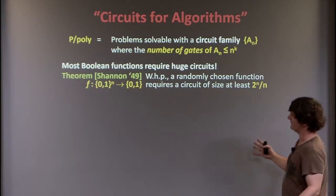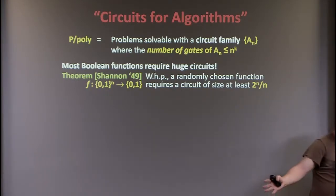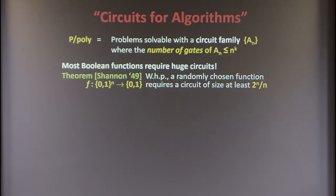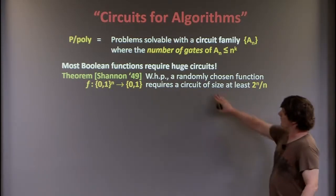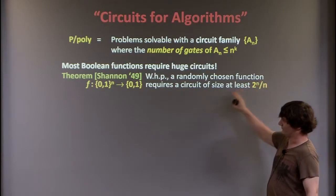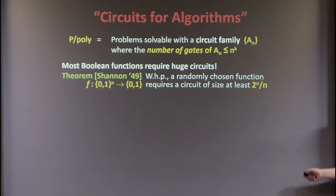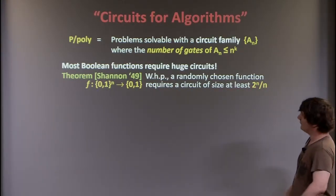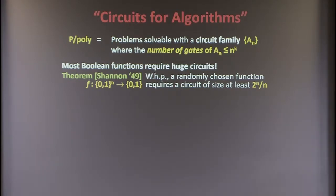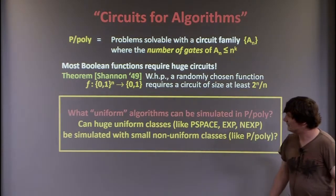Most Boolean functions require huge circuits. For example, if you just randomly chose a function by picking a uniform random 2^n-bit string, this will require a circuit of size at least 2^n / n with high probability. So most functions require huge circuits.